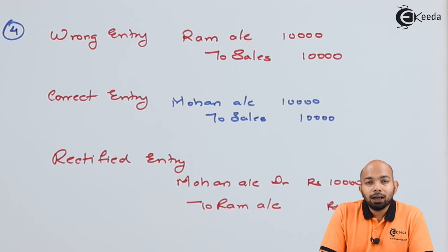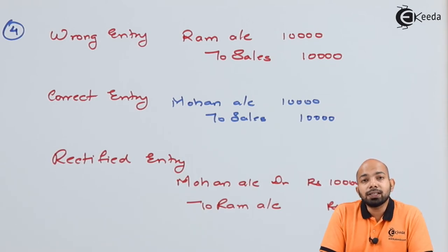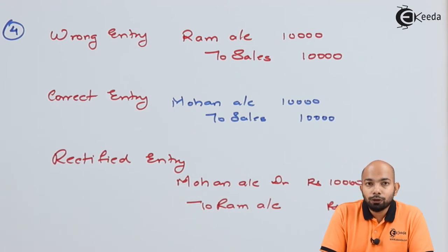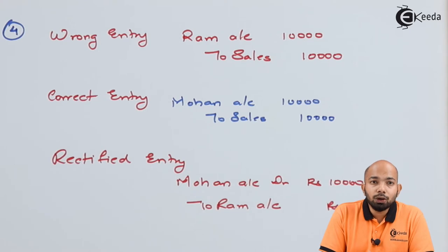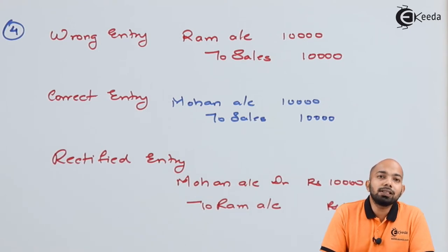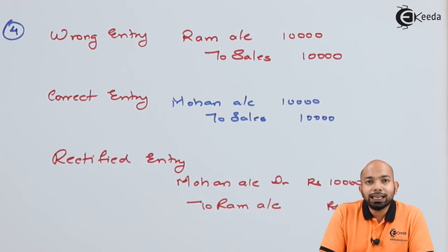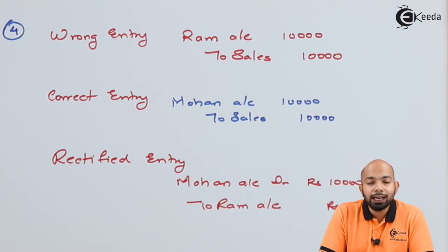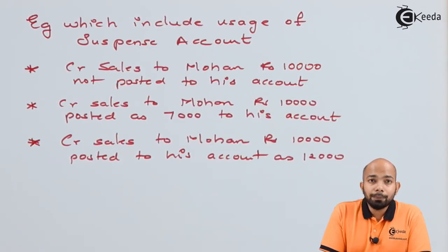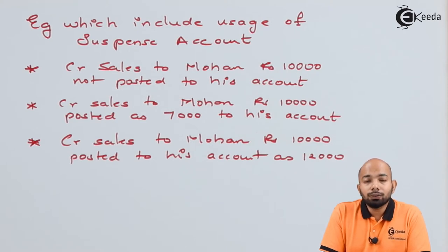We'll now study how errors affect your trial balance and how a suspense account will be used. We have certain examples where the trial balance is affected. Please make sure you note down these transactions — we'll analyze how the correct, wrong, and rectified entries are interpreted, and how the suspense account becomes necessary when one single account is in error.